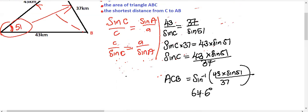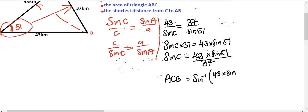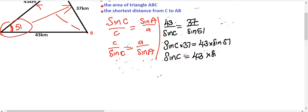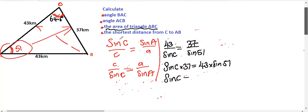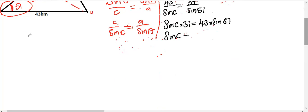So angle ACB is 64.6 degrees. This takes us to the next part of the question — we now need to calculate the area of this triangle. We can use the formula: Area = ½ × b × c × sin(A).